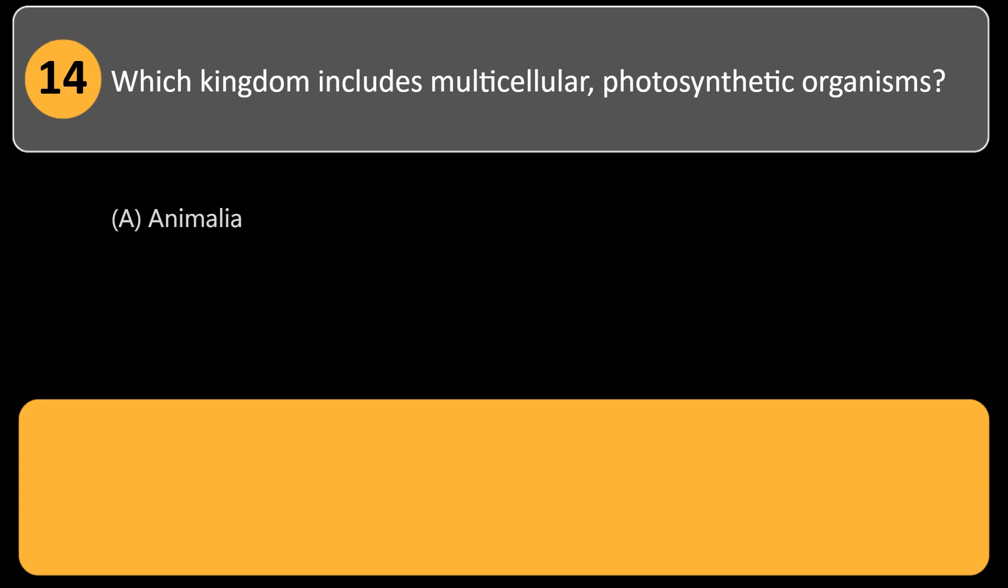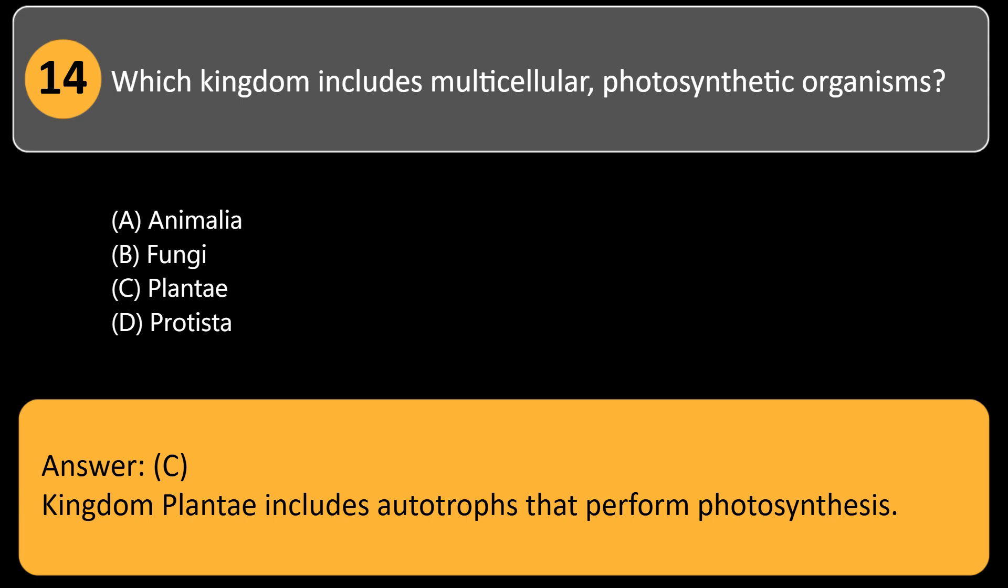Which kingdom includes multicellular, photosynthetic organisms? A. Animalia, B. Fungi, C. Plantae, D. Protista. Answer: C. Kingdom Plantae includes autotrophs that perform photosynthesis.